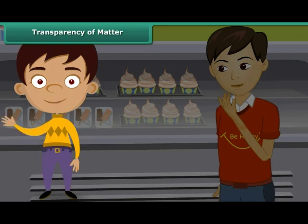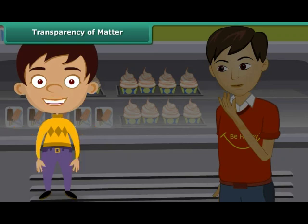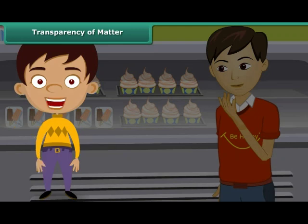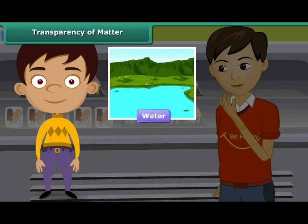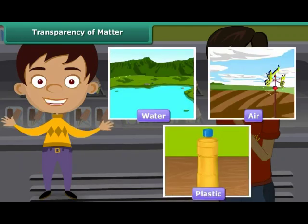In other words, a transparent substance absorbs light, reflecting back very little. As a result, it appears clear and things can be seen through it. Other examples of transparent substances are water, air, plastic, etc.